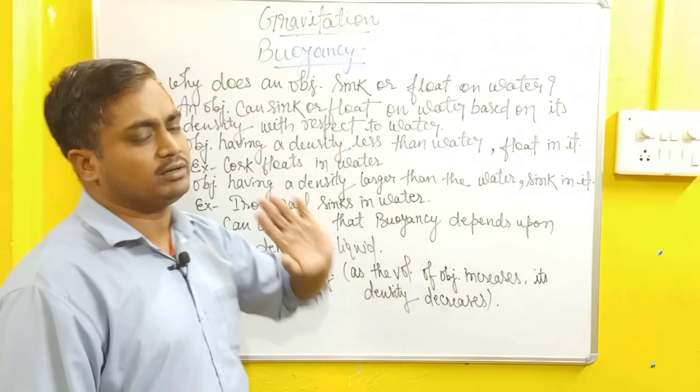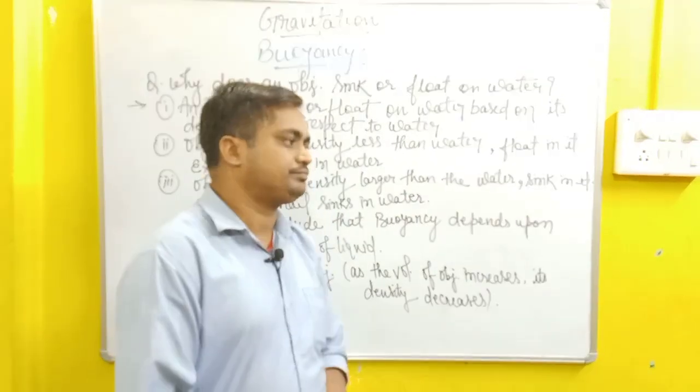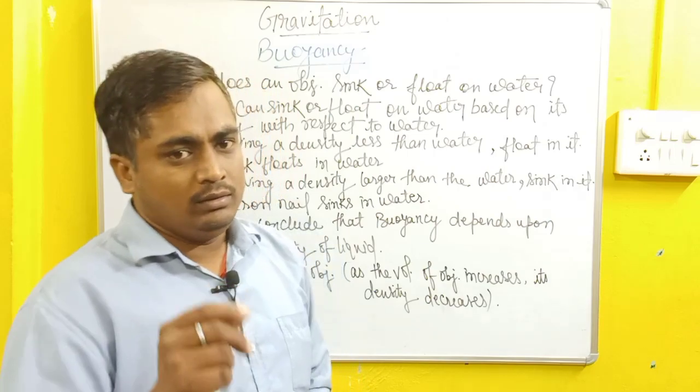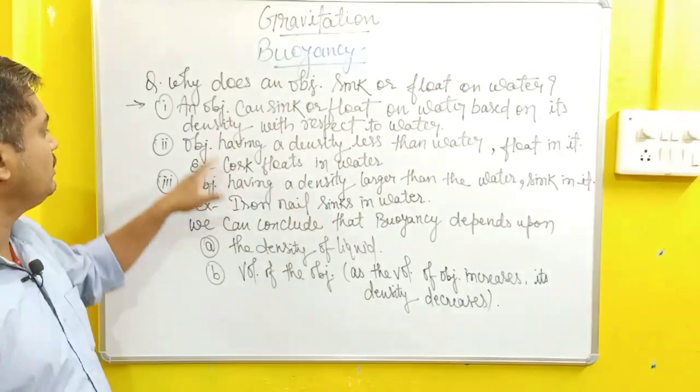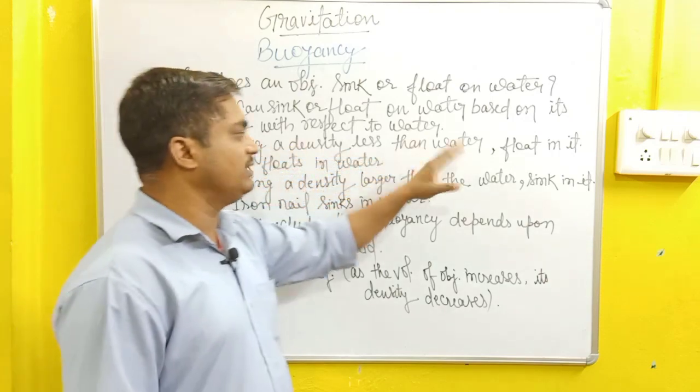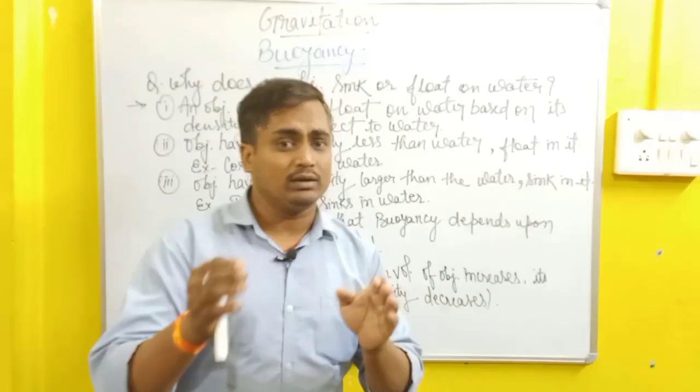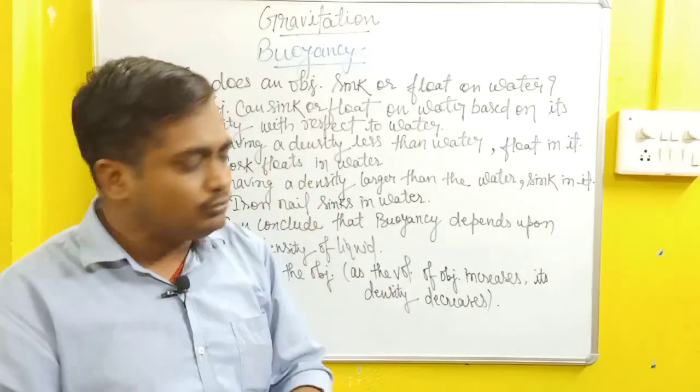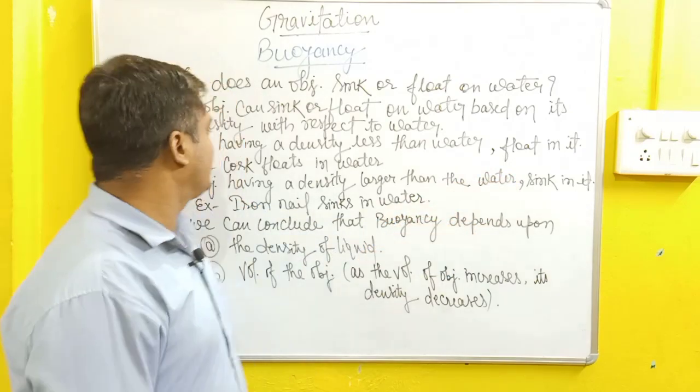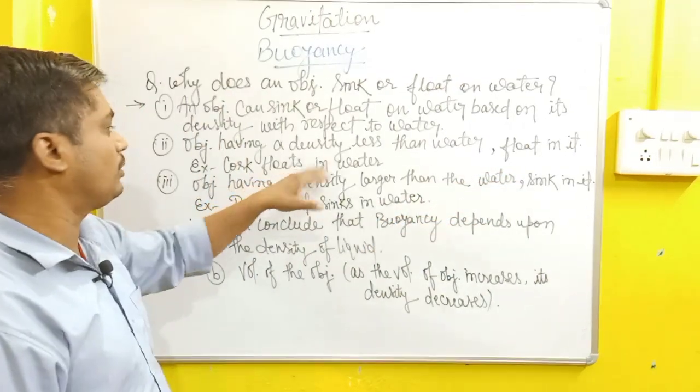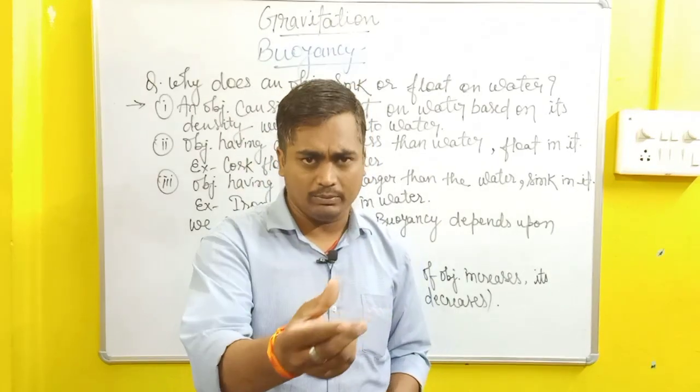Second point is here: object having a density less than water. Understand this students, if object's density is less than water's density, it will float. For example, cork floats in water. Cork, you know, is light, or thermocol you can take. If you put thermocol on water surface or water bodies, it will not sink.